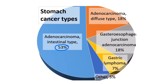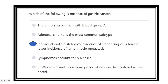Looking at stomach cancer subtypes: adenocarcinoma is most common at about 53 percent, adenocarcinoma diffuse type is 18 percent, gastroesophageal junction adenocarcinoma is 18 percent, lymphoma is 5 to 7 percent, and other types account for 5 percent.